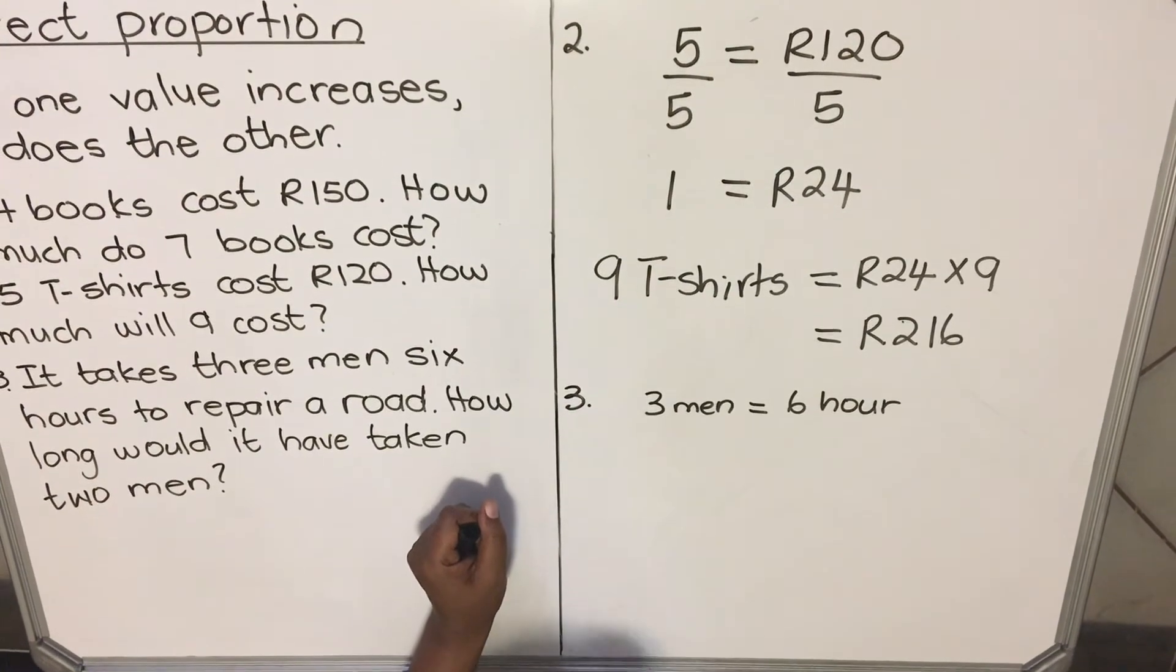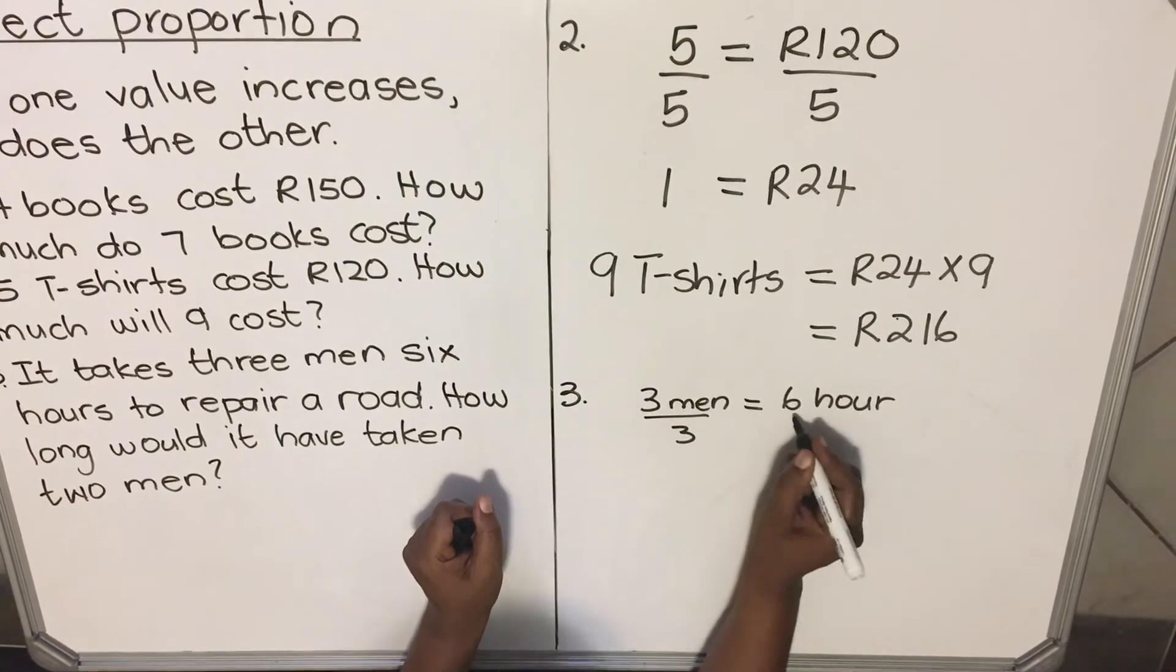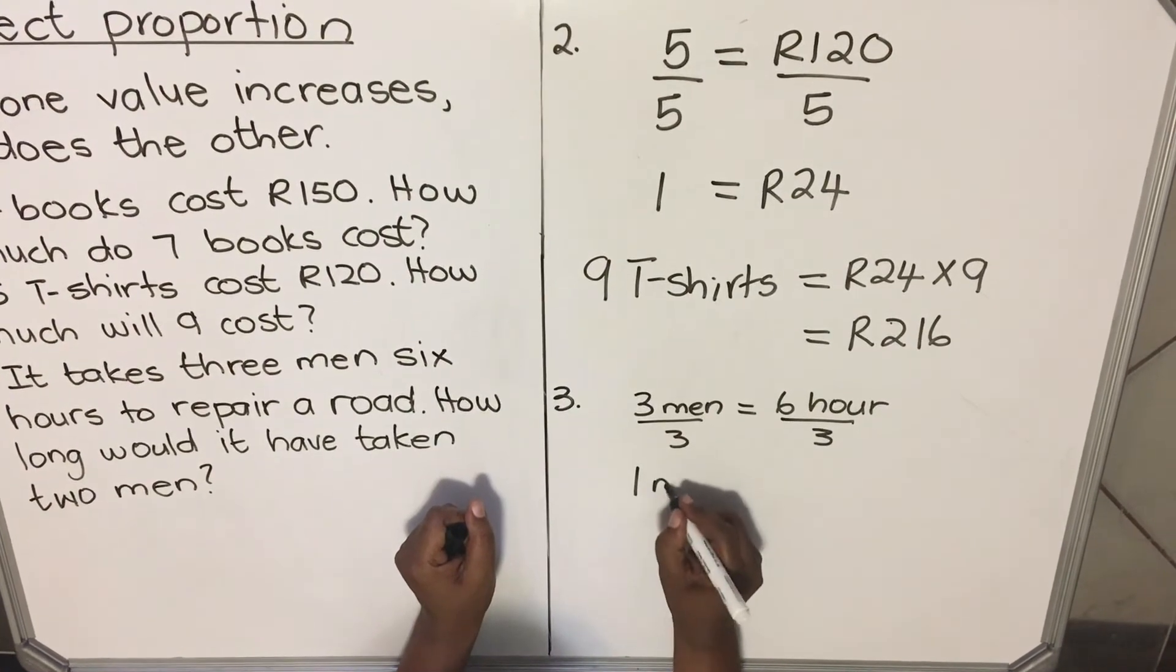So we need to find one man. We need to divide by three on both sides.